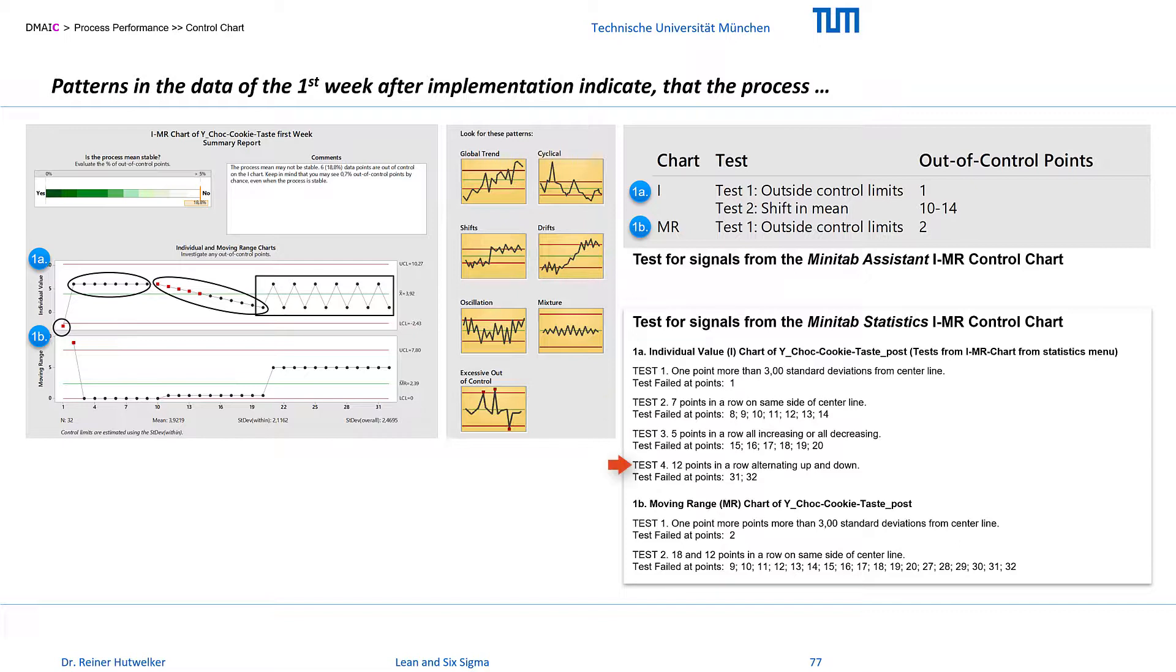Test 4 indicates that there are several points in a row, alternating up and down. This ping-pong can point to sequential dependencies, where a bad result causes a good one and vice versa. This may be the case, for example, when the response of a process to an intervention is delayed and we enter a phase of alternating over- and under-steering. But it is also possible that our chef was supervised on every second order, applying the new standard and then returning unobserved to her previous habits.